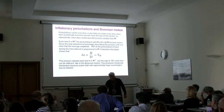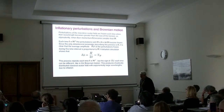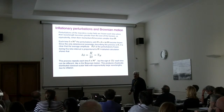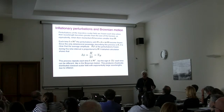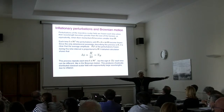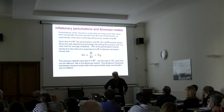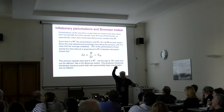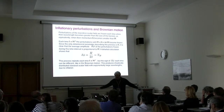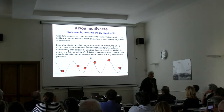Now the last part: a quick reminder that all perturbations produced by inflation behave like Brownian motion. In every point, the scalar field experiences quantum jumps, but exponential expansion of the universe stretches these perturbations to exponentially large scales. The field may be kicked up or down, producing exponentially large parts of the universe with different field values phi — and this is about the multiverse.